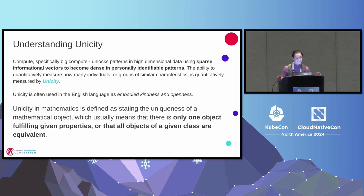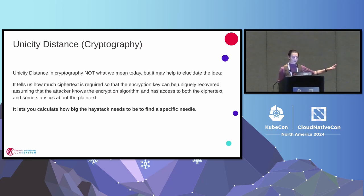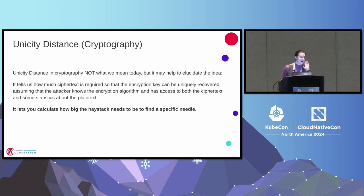In the English language, unicity is generally used as embodied kindness and openness, but here it means that I am able to know if I can find a specific object or the traits of a given class of objects before I go looking. A great way to understand this if you've done cryptography is unicity distance — that's not specifically what we're referring to, but it's a good metaphor. Unicity distance lets you calculate exactly how big this haystack has to be in order for you to find a specific hash needle.